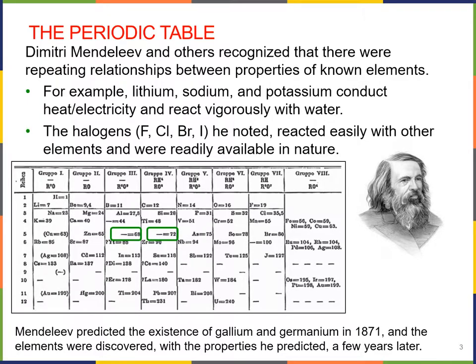In the mid-1800s, a Russian scientist by the name of Dmitry Mendeleev and other scientists as well began to recognize repeating relationships in the properties of known elements. For example, when you arranged the elements in order of increasing atomic mass, you'll find that lithium, sodium, and potassium all have related properties.